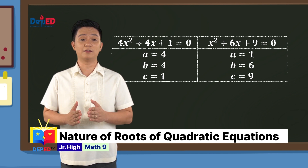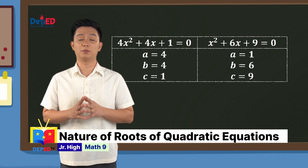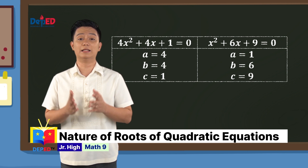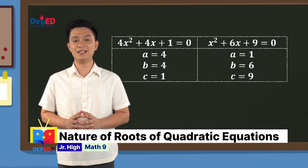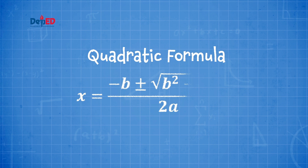Let us identify the value of the coefficients a, b, and c in the equation 4x² + 4x + 1 = 0 of the first pair. The leading coefficient is 4, so a = 4. The middle term's coefficient is 4, so b = 4. While the constant term is 1, so c = 1. Let's substitute these values in the quadratic formula to determine the roots of the equation.